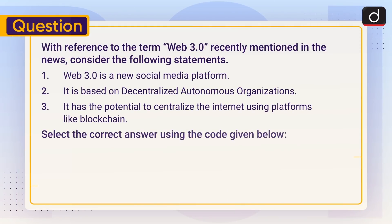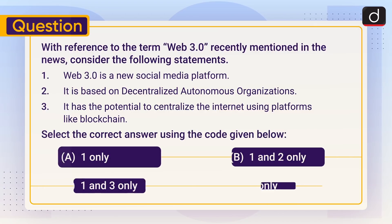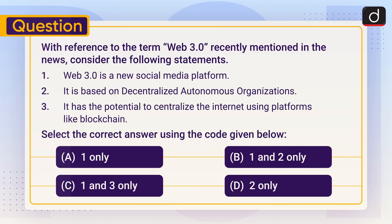Now it's time for the practice question. With reference to the term Web 3.0 recently mentioned in the news, consider the following statements: 1. Web 3.0 is a new social media platform. 2. It is based on Decentralized Autonomous Organizations. 3. It has the potential to centralize the internet using platforms like blockchain. Select the correct answer using the code given below: (a) 1 only, (b) 1 and 2 only, (c) 1 and 3 only, or (d) 2 only. Send the answer in the comment section. Stay tuned for the next episode. Thanks for watching. Have a great day.